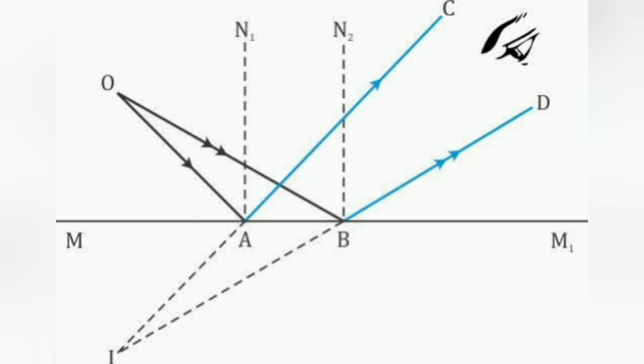Here, only the two rays OA and OB are shown, which are reflected as AC and BD from the mirror. These reflected rays enter our eyes and they appear to come from a point I behind the mirror. Thus, I is the virtual image of the object O.